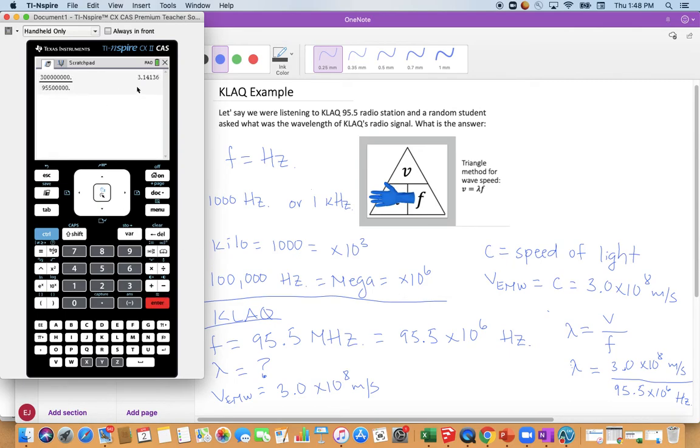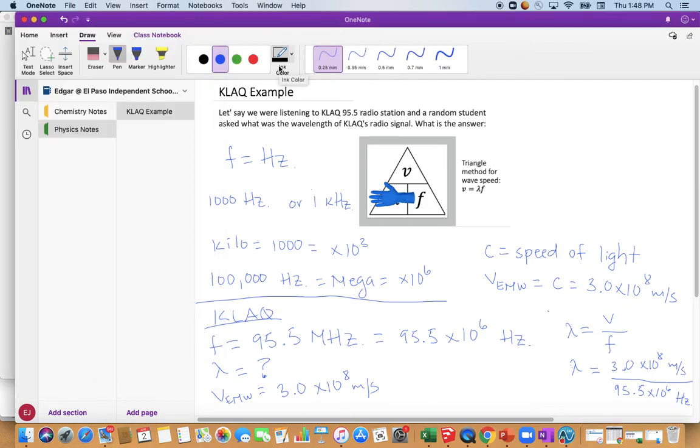We have 3.14136. I know what you're thinking. Yes, this is the first three digits of pi. I thought that was pretty cool. But maybe you don't think so because you don't like physics as much as I do. But maybe you do. I don't know. We're going to use red ink. Lambda equals 3.14 meters. That is the answer.